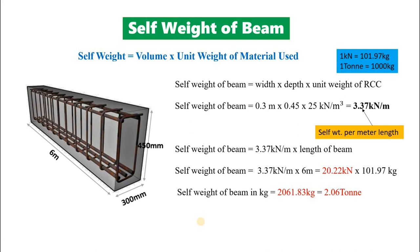Next is self weight of beam. Self weight of beam equals width of the beam into depth of beam into unit weight of material used. Here the width of the beam is taken as 300 mm and the depth of the beam is taken as 450 mm. So 0.3 multiplied with 0.45 into unit weight 25 for RCC from IS 875 part 1. Then self weight of the beam will be 3.37 kN per meter. If we need the self weight for entire beam, multiply with length of the beam — here 6 meter. So we will get 20.22 kN. If we want in kg, multiply by 101.97, then we will get self weight of beam as 2,061.83 kg, that is 2.06 tons.